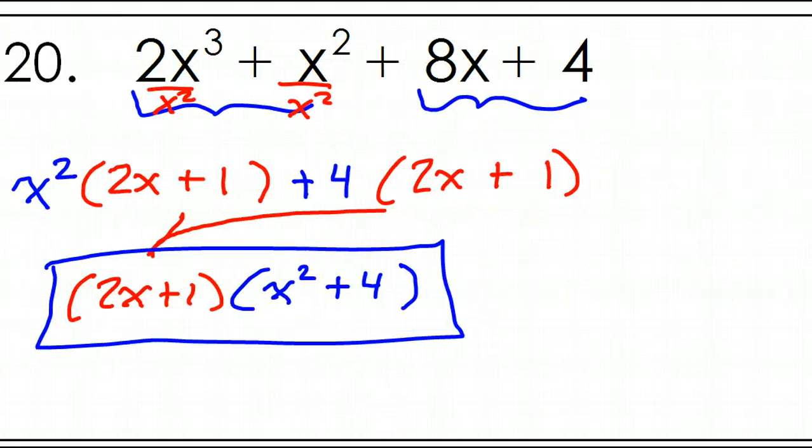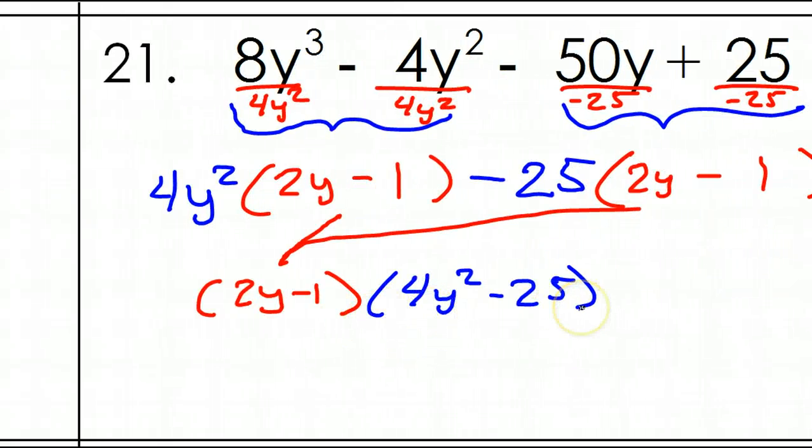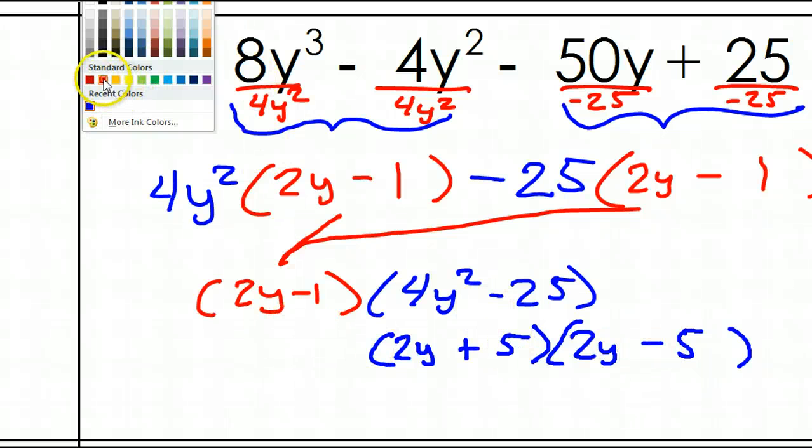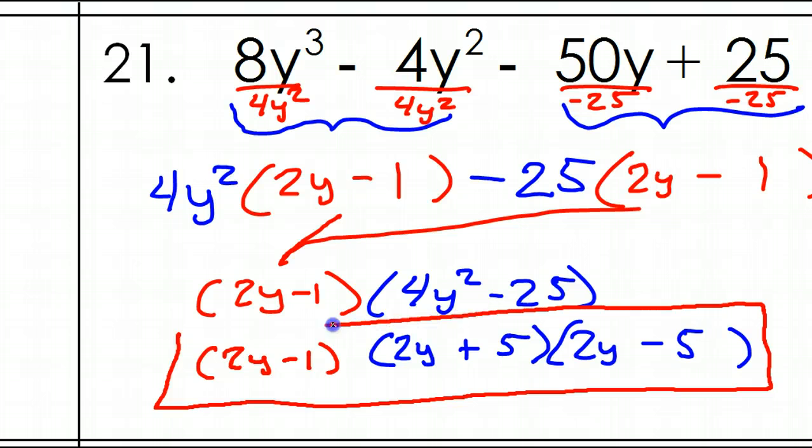On the last problem, once we got to this point, we had to stop. Because there was nothing we could do. So, what about this problem? Are we going to stop here or do we keep going? Yeah, we have to keep going. This is the difference of two squares. So, this blue stuff will easily factor as 2y plus 5 times 2y minus 5. So, please do not stop here when you've got the difference of two squares. You've got to keep going. And, of course, we'll keep the red part 2y minus 1. So, all three factors. That's the answer for number 21.